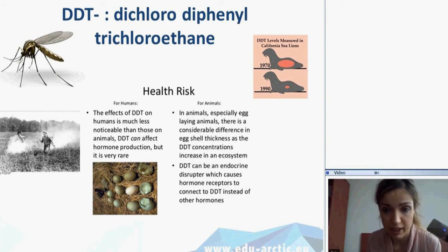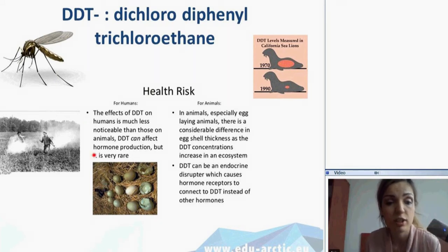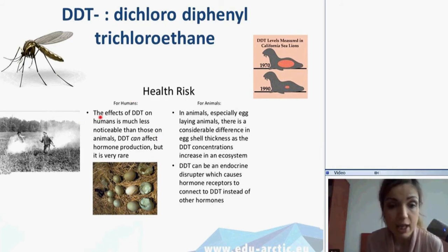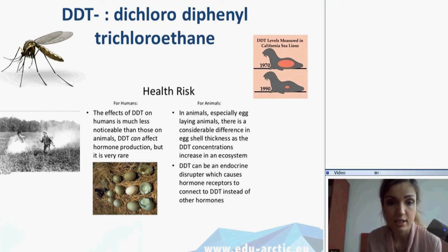After a period of time, the long-term effects of DDT began to show. Populations of many animals — birds and fish in particular — began to decrease rapidly, because the effects of DDT on the ecosystem are more noticeable than its influence on humans. DDT affects egg-laying animals especially, because it decreases the thickness of eggshells, which is very dangerous for whole populations.